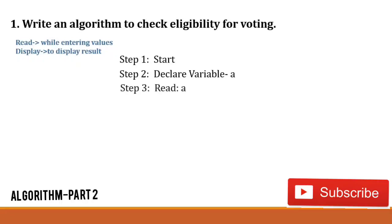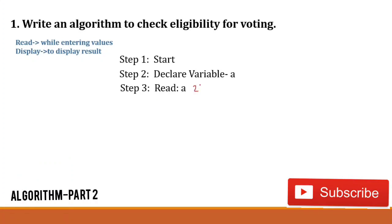So the third step is: Read a. Here 'a' is my variable and this variable is going to hold the age of the candidate. Consider I entered 21 here — 21 is the age and I want to check whether the candidate with age 21 is eligible for voting or not. In step four we check whether the candidate is eligible for voting or not. The eligibility criterion is that age should be 18 or greater than 18.